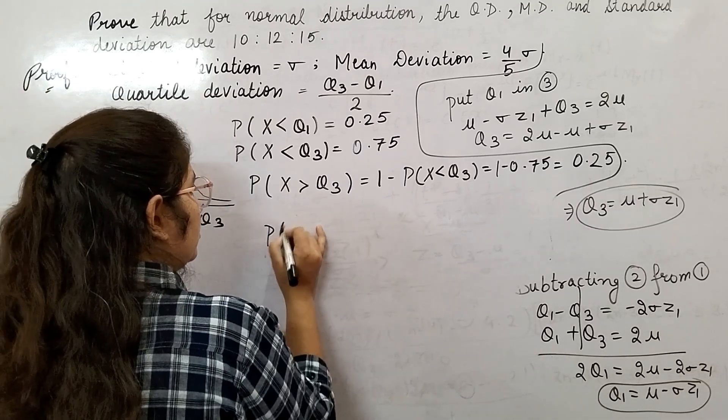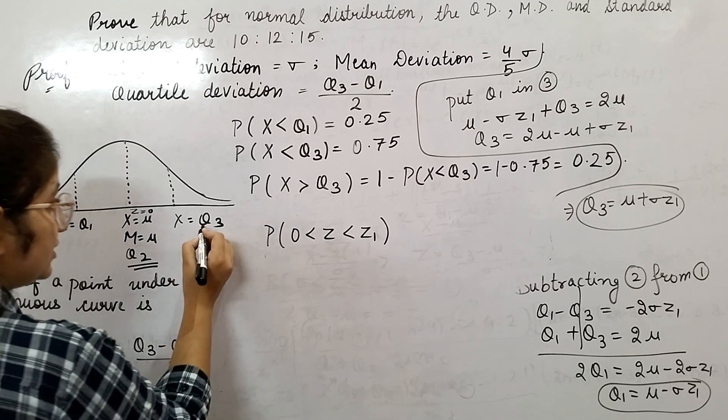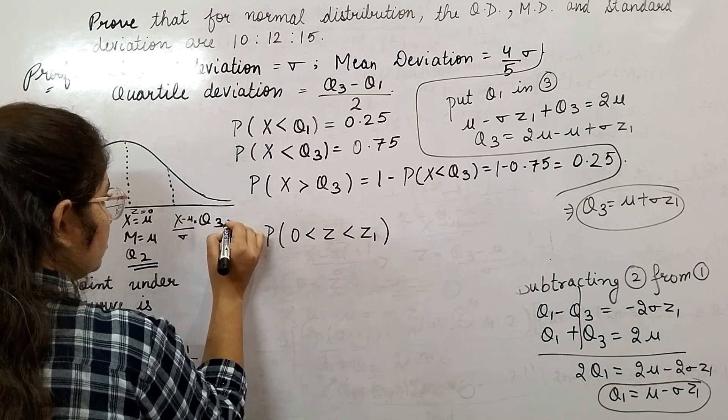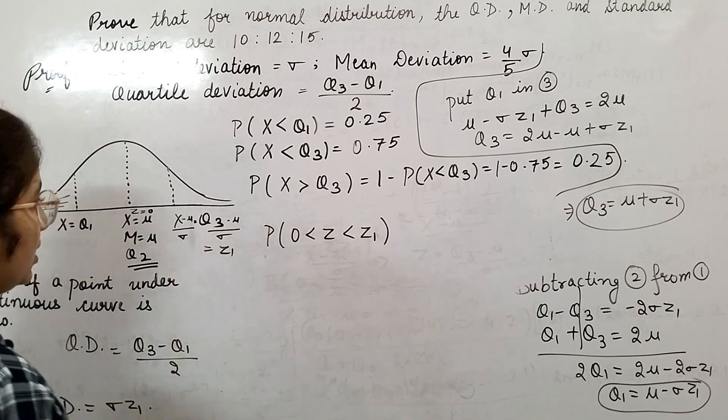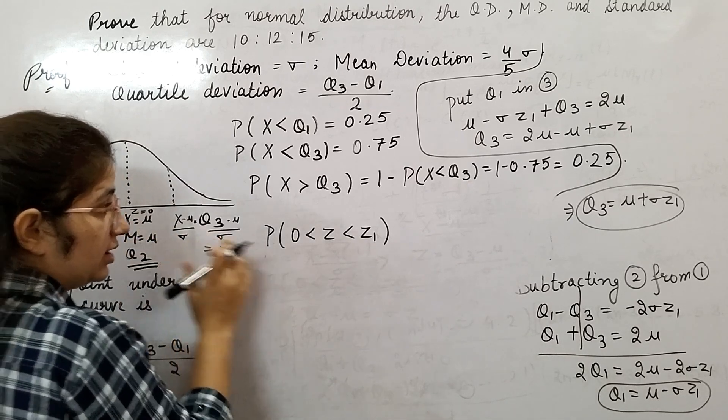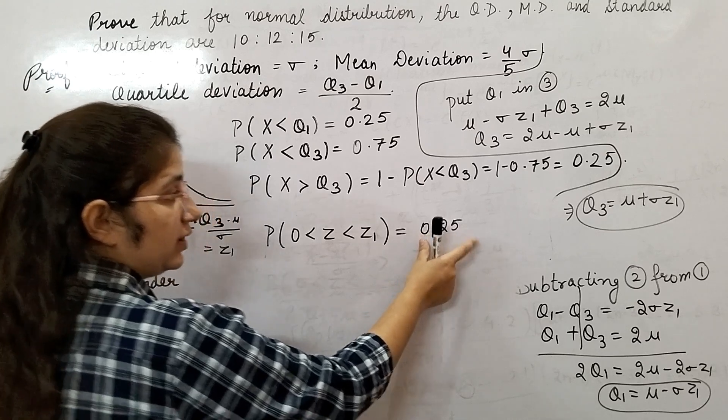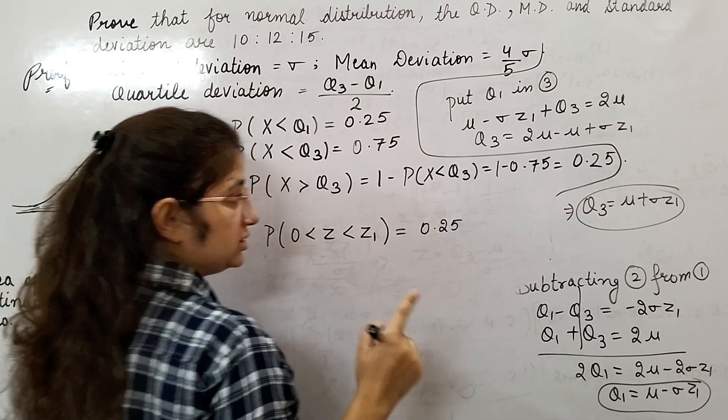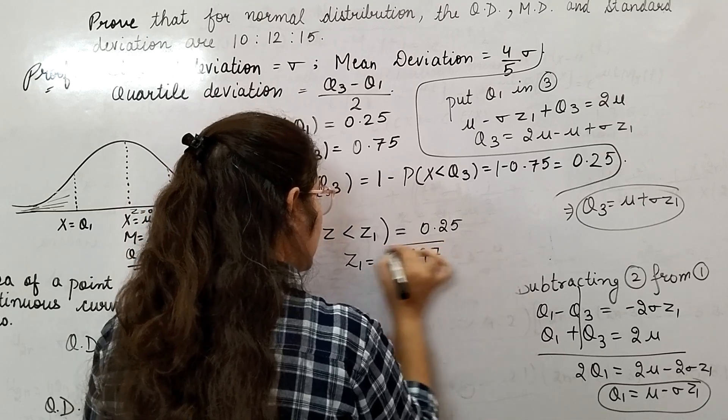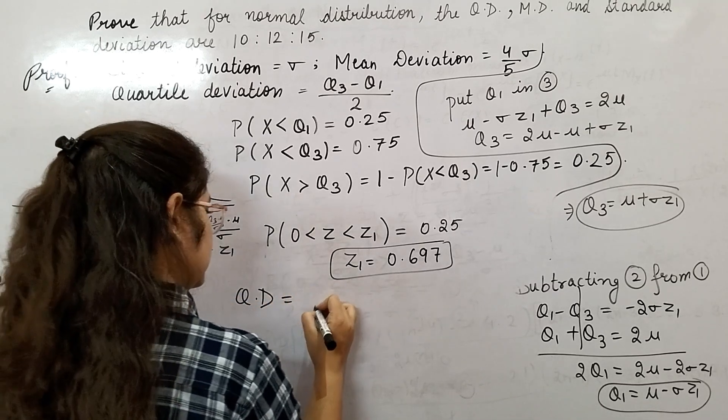Probability of 0 less than z less than z1—what was z1? At this point, x minus mu by sigma equals q3 minus mu by sigma. I have given this the name z1. From z equals 0 to z equals z1, this probability is 0.25. From the table, the z1 value comes as 0.67. I will tell you how to see this value from the table.